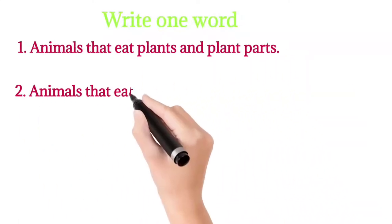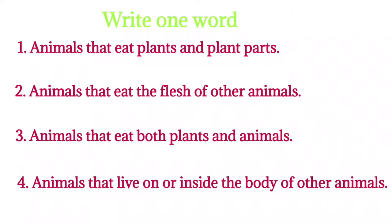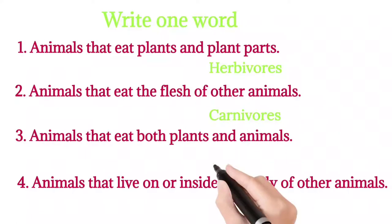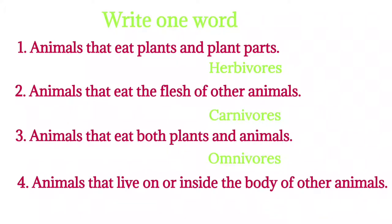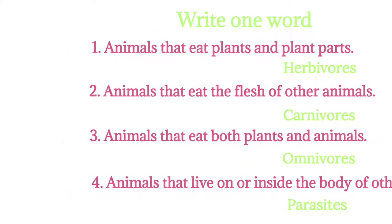Write one word. One: animals that eat plants and plant parts - they are herbivores. Two: animals that eat the flesh of other animals - they are called carnivores. Three: animals that eat both plants and animals - they are omnivores. Their front teeth are sharp like carnivores and back teeth are flat like herbivores. Four: animals that live on or inside the body of other animals - they are parasites.